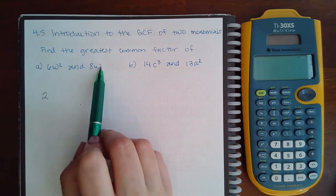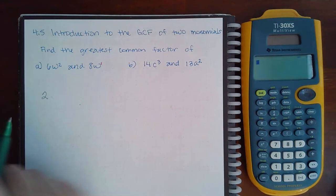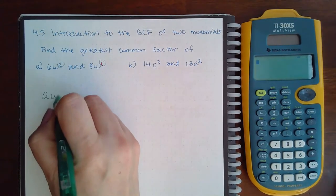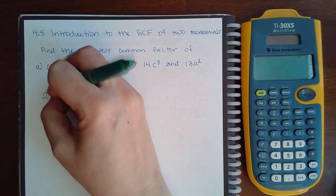With the variables, you are always going to pick the lowest exponent. So between 2 and 1, one is the lowest exponent, so I will factor out 2w to the one power, or just 2w.